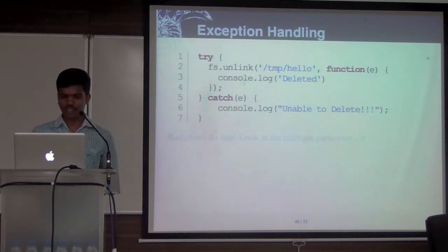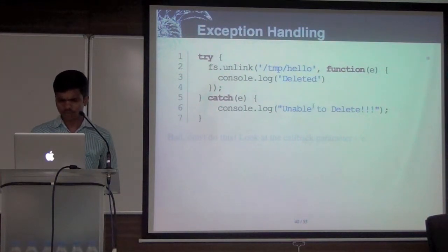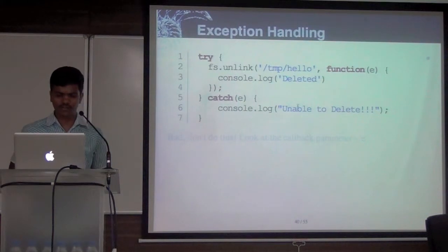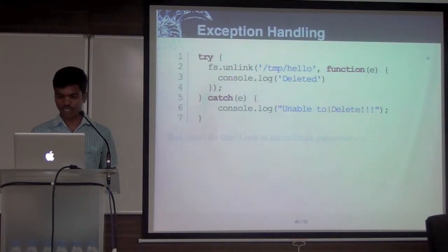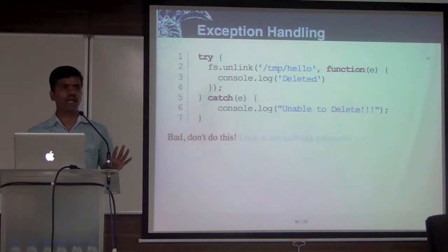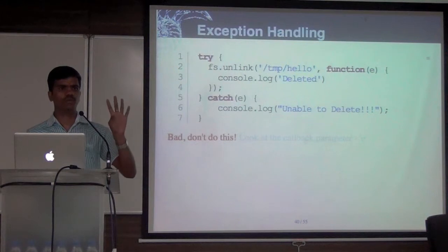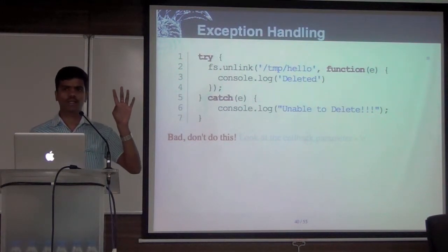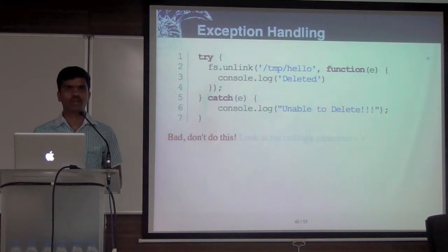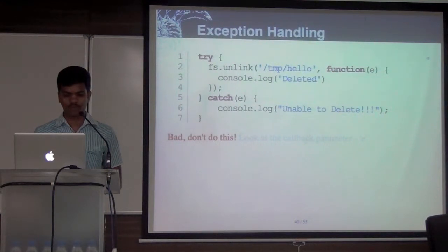If you look at this: I'm just deleting a file. If there is any exception, I'm saying console.log 'unable to delete'. But don't do this — any guess why? Because the error would also be asynchronous. Even if there's an error, the system won't return it immediately — it will send it to the callback.